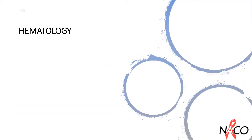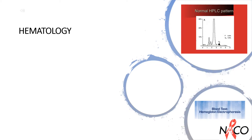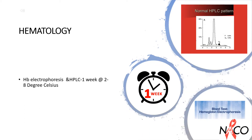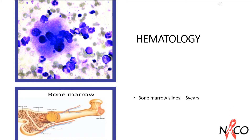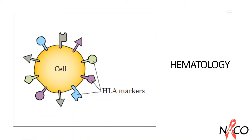Samples for hemoglobin electrophoresis and high-performance liquid chromatography should be kept at 2 to 8 degrees Celsius for one week, or can be kept longer if kept below minus 20 degrees Celsius. Bone marrow slides can be kept for 5 years. HLA typing cell preparation should be kept for 3 days.